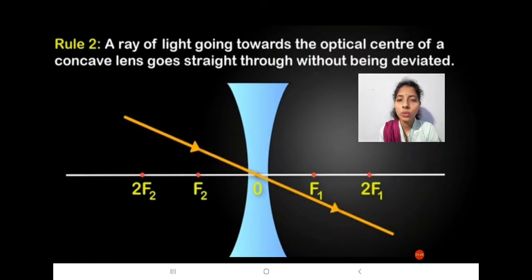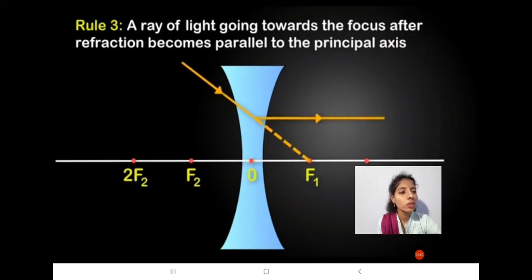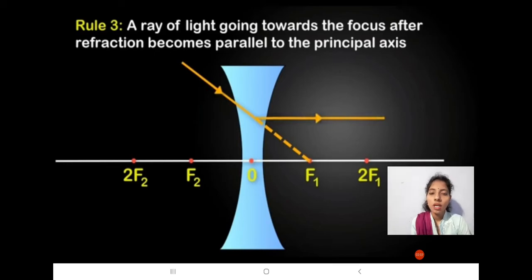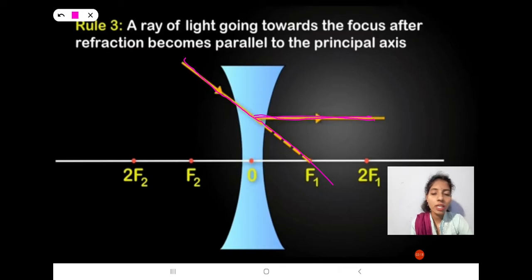Rule 2: A ray of light going towards the optical center of a concave lens goes straight through without being deviated. Rule 3: A ray of light going towards the focus, after refraction, becomes parallel to the principal axis. So this ray of light is going towards the focus and after refraction it is parallel to the principal axis.